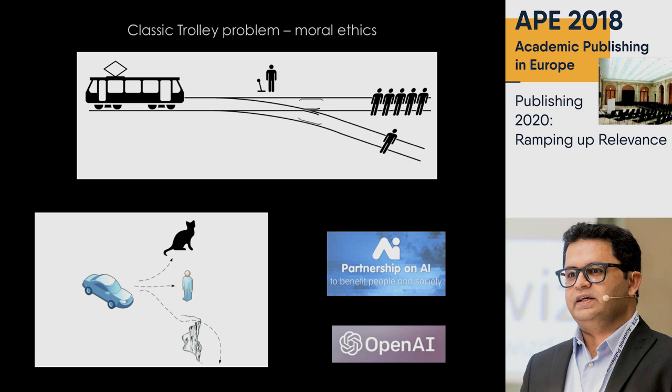This is one of the problems we discussed in our ethics class — the classic trolley problem. The problem is: if there is a trolley going that way and there are five people in that line, and I have a decision to make to change the course and divert this trolley to a path where there is one person, what would I do? And if there are two paths — on one there is a four-year-old kid and on another there is an 80-year-old man — which one would you go for, and what would be your dilemma?